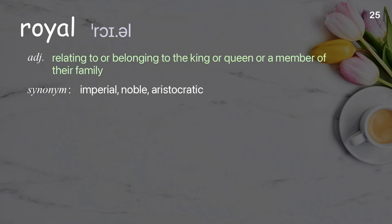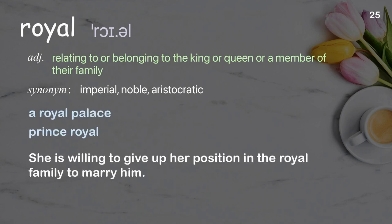Royal: Relating to or belonging to the king or queen or a member of their family. Examples: a royal palace, prince royal. She is willing to give up her position in the royal family to marry him.